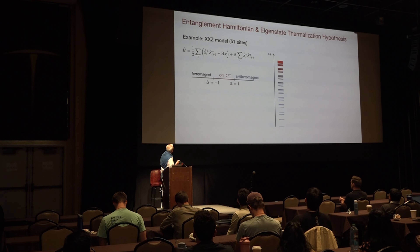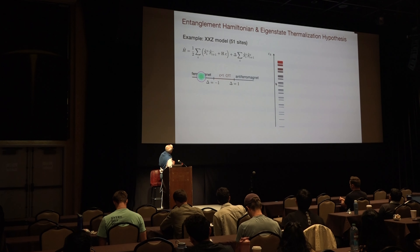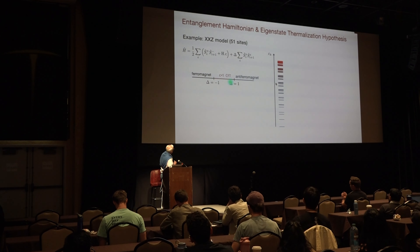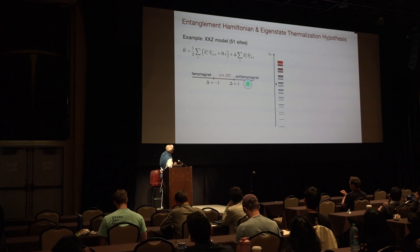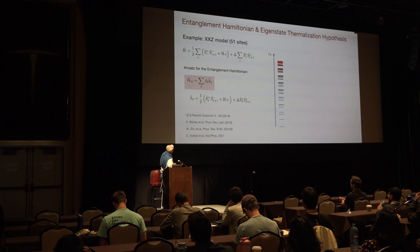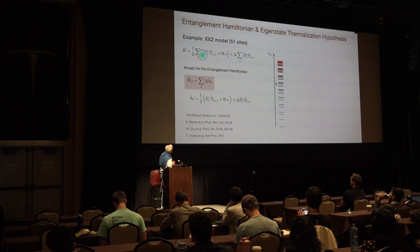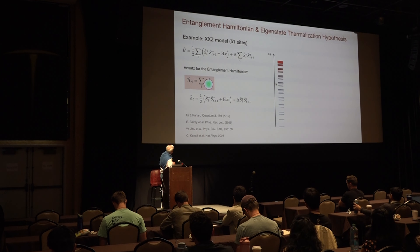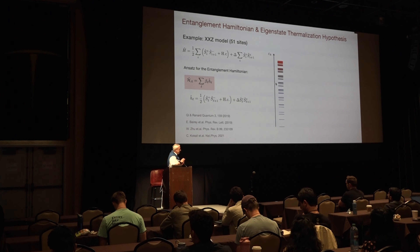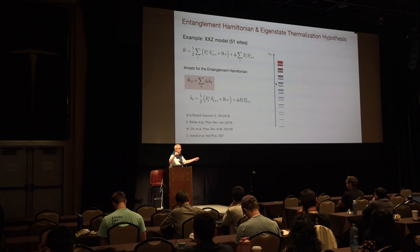Now let's slowly come to the point. We have our Heisenberg model, our phase diagram with the central charge and conformal field theory in this region, and the antiferromagnet here. Let's go to the point delta=1, and this is now our ansatz for this Hamiltonian — we multiply local temperatures in front and put this into the ansatz, doing entanglement Hamiltonian learning. Not the Gibbs-state type with constant temperature, but where you are really after the temperature profile.